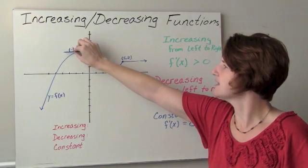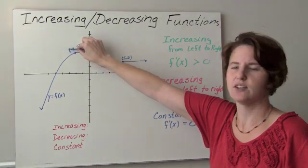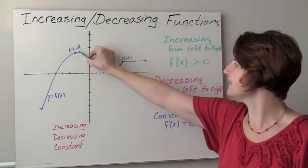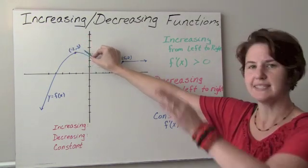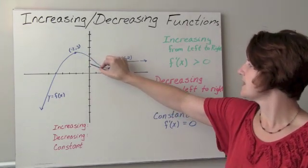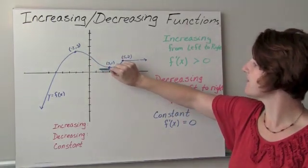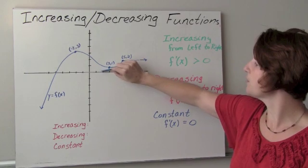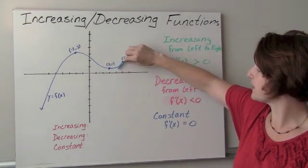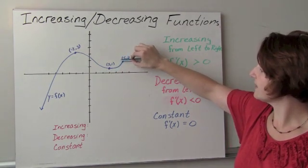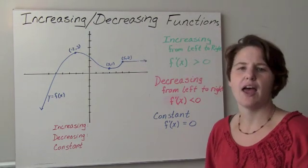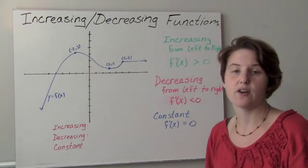At x equals negative 2, we have a zero slope. Then we have negative slopes — it's decreasing from left to right. Then at x equals 3, we have a zero slope, positive slope between 3 and 5, and then finally there's a zero slope for x greater than 5.